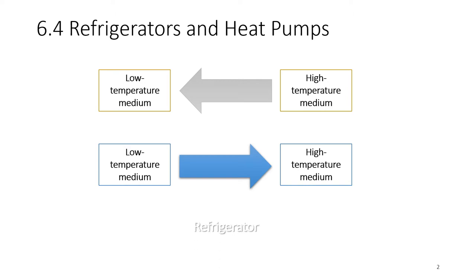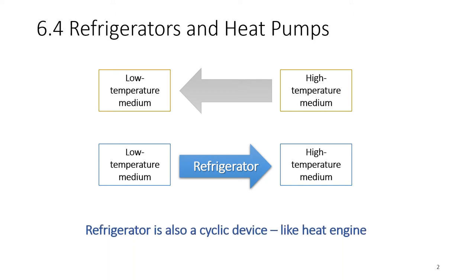Obviously the device is a refrigerator. So what does a refrigerator do? Let's say you have this compartment — this is where you place all your food, and it is already cool. Let's say the refrigerator is at 3 degrees Celsius, and the room outside — let's say your kitchen — is at 27 degrees Celsius.